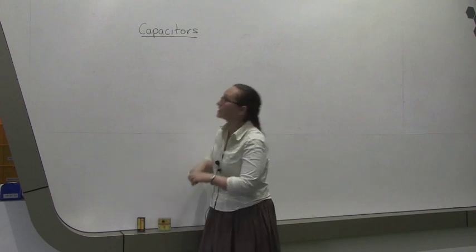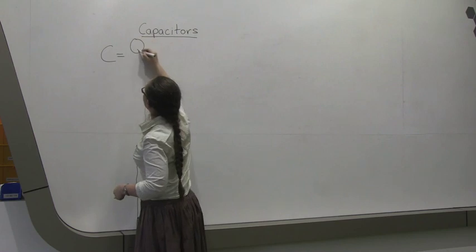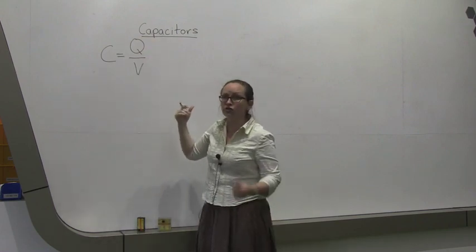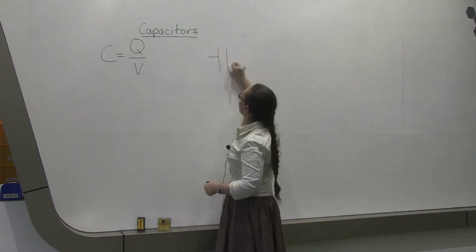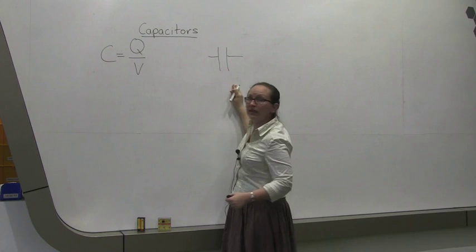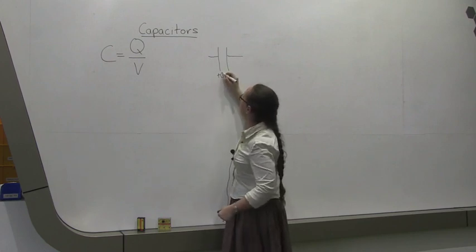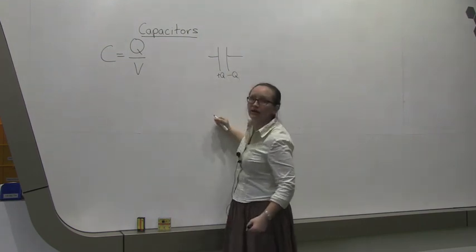As you know from class, capacitance is equal to Q on V, where Q is the charge stored on each of the plates. As you know, a capacitor basically consists of two plates. You've got a positive plate and a negative plate. The positive plate has charge plus Q and the negative plate has charge minus Q on it.